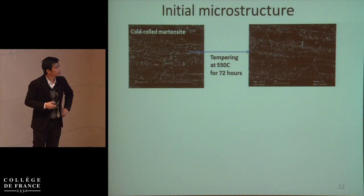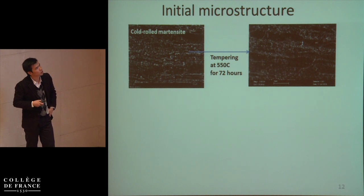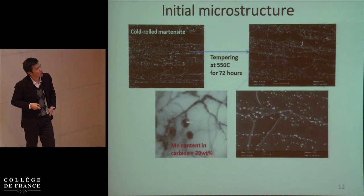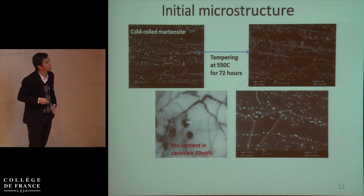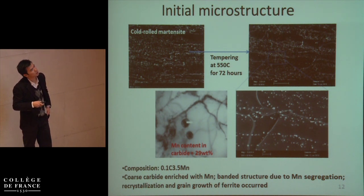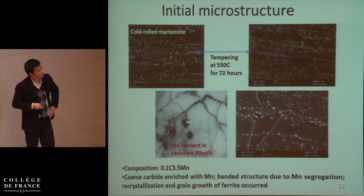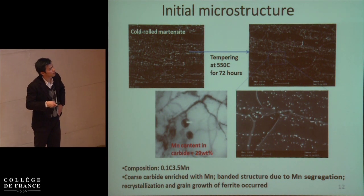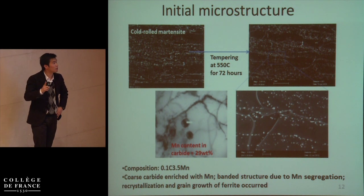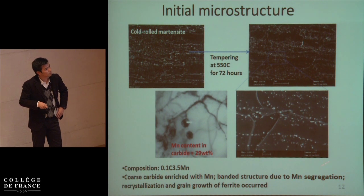Regarding microstructure: we start from cobalt martensite and then temper it for a long time — three days — to have coarse carbide; the carbides can be several hundred nanometers. This is the composition with 3.5% manganese — we cannot increase the temperature further to have coarse carbide. What we have is coarse carbide enriched with manganese; the manganese content within the carbide can be higher than 25%, and the distribution of carbide is banded due to manganese segregation.